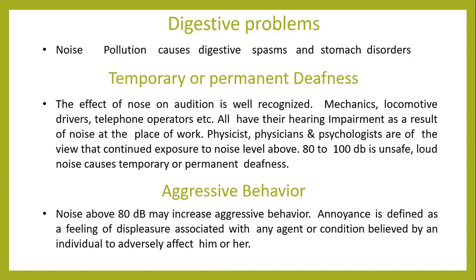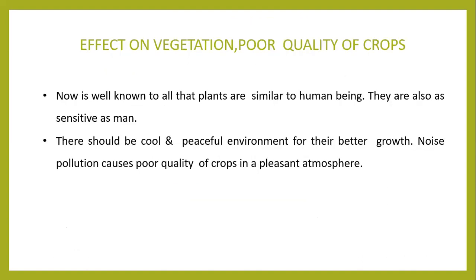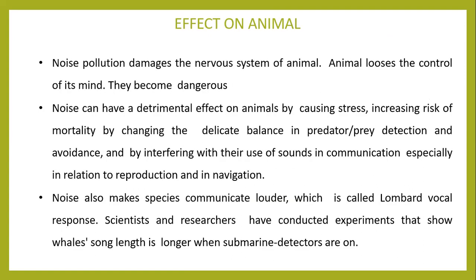Annoyance is defined as a feeling of displeasure associated with any agent or condition believed by an individual to adversely affect them. The next effect is on vegetation and poor quality of crops. It is well known that plants are similar to human beings and are as sensitive as people. There should be a cool and peaceful environment for better crop growth, and noise pollution causes poor quality of crops in an unpleasant atmosphere.